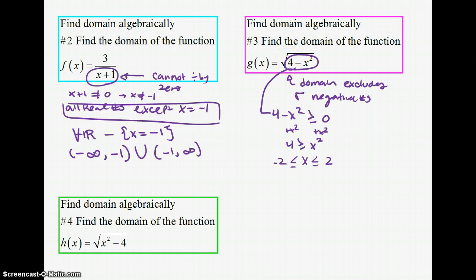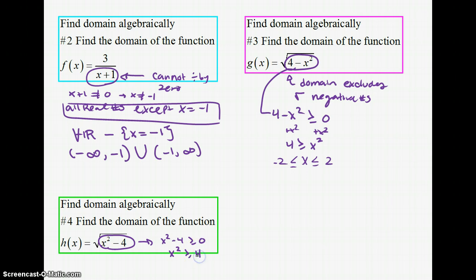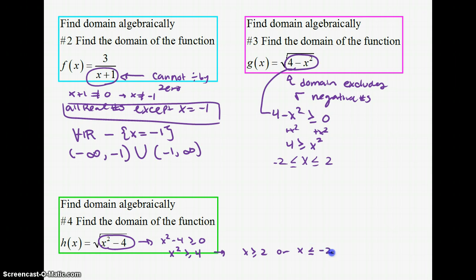For problem 4, we find the domain of a similar but differently written expression: x² − 4. Here, x² − 4 must also be greater than or equal to 0, so x² ≥ 4. This is the opposite of the previous problem — x must be greater than or equal to 2, or x must be less than or equal to −2.